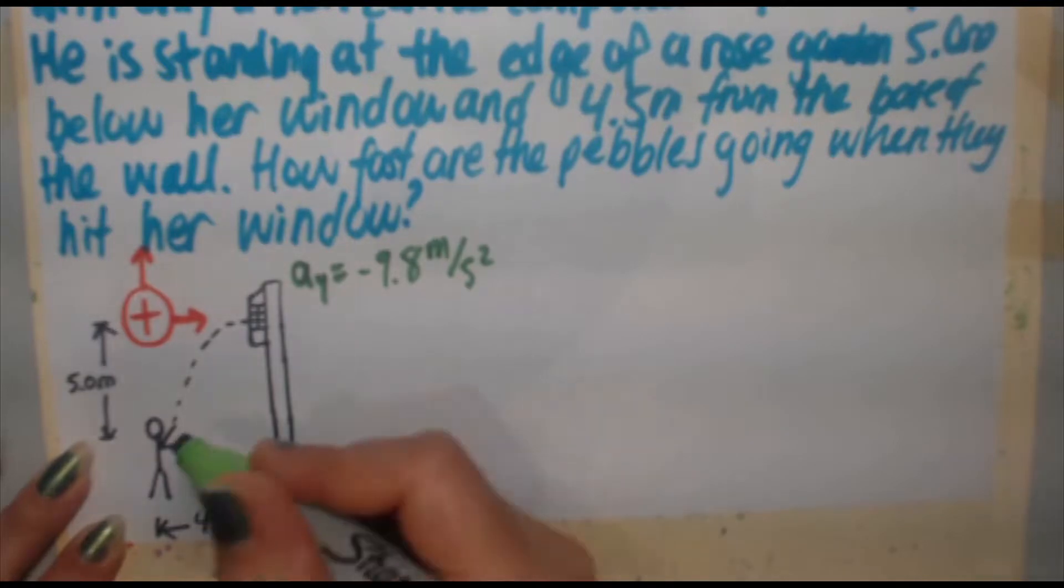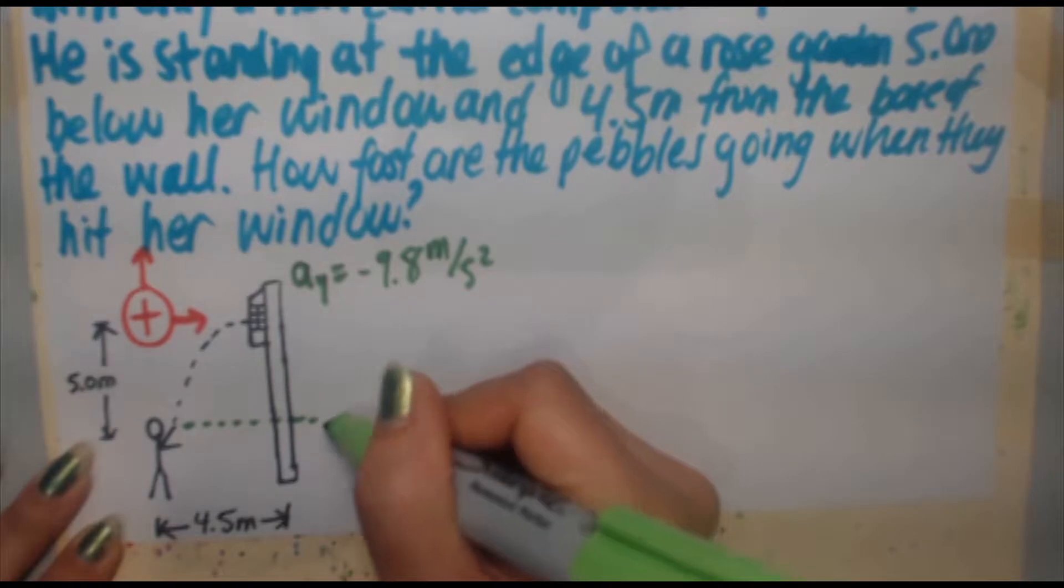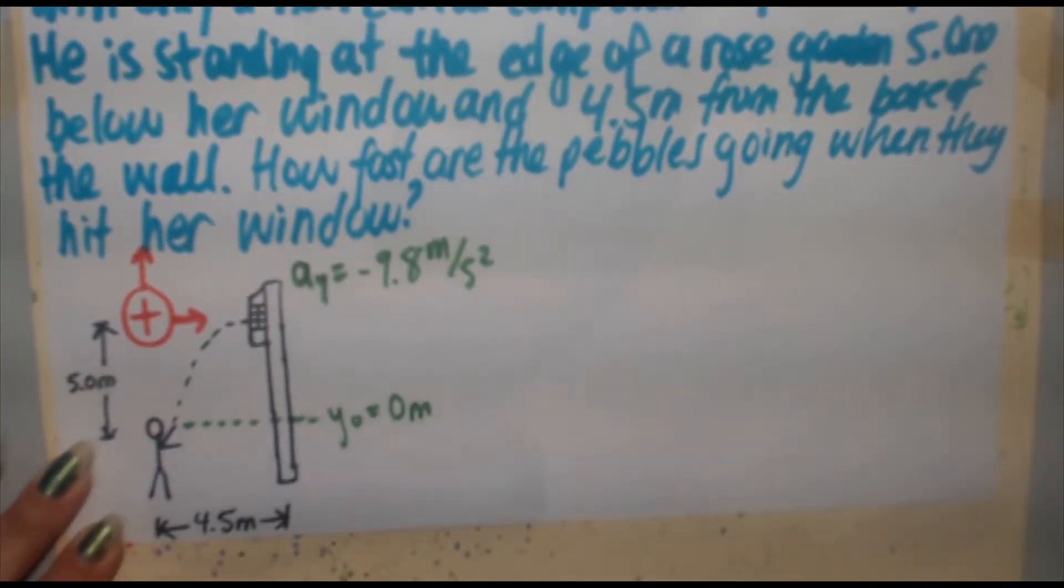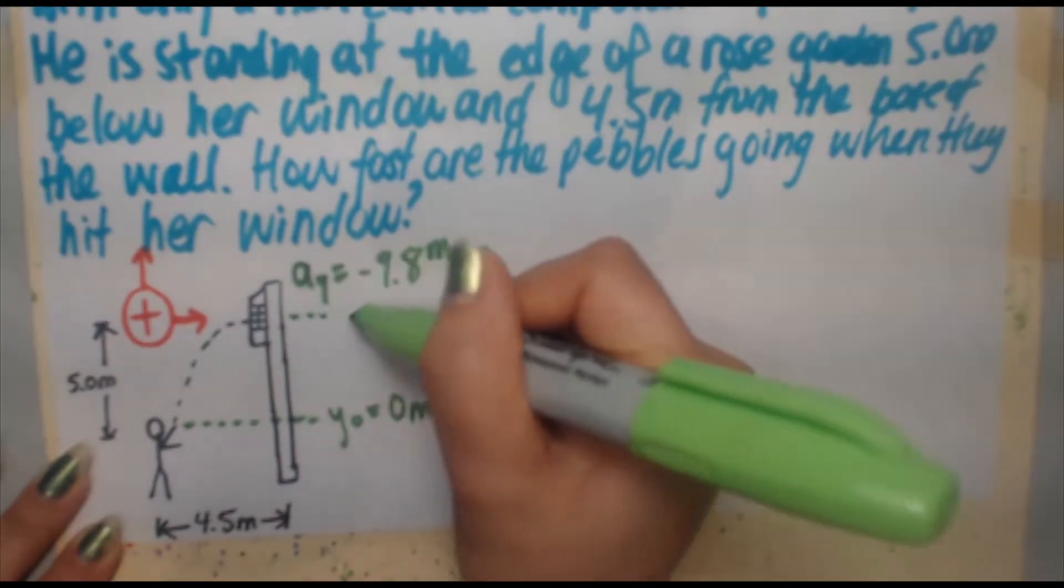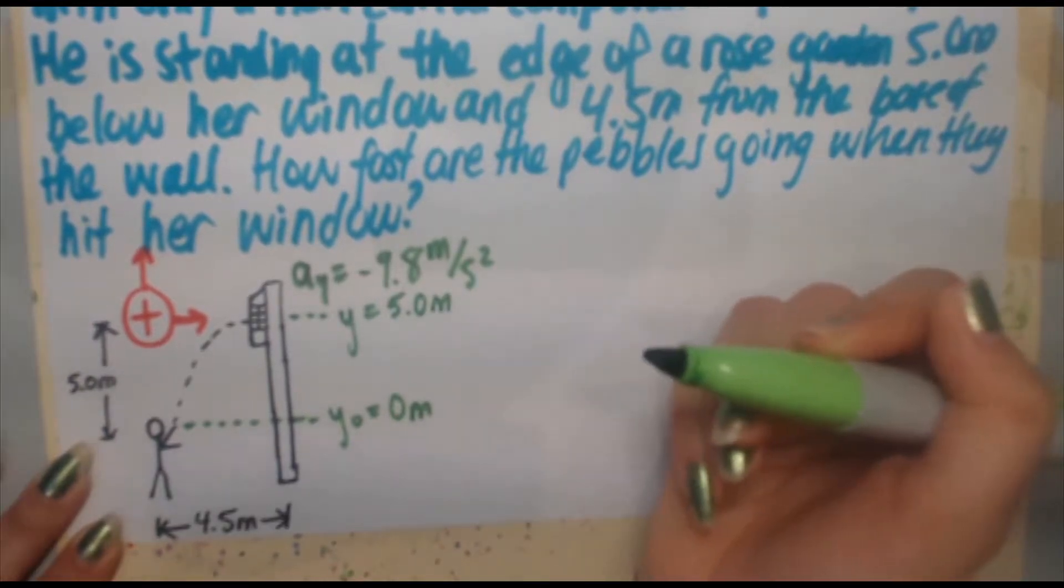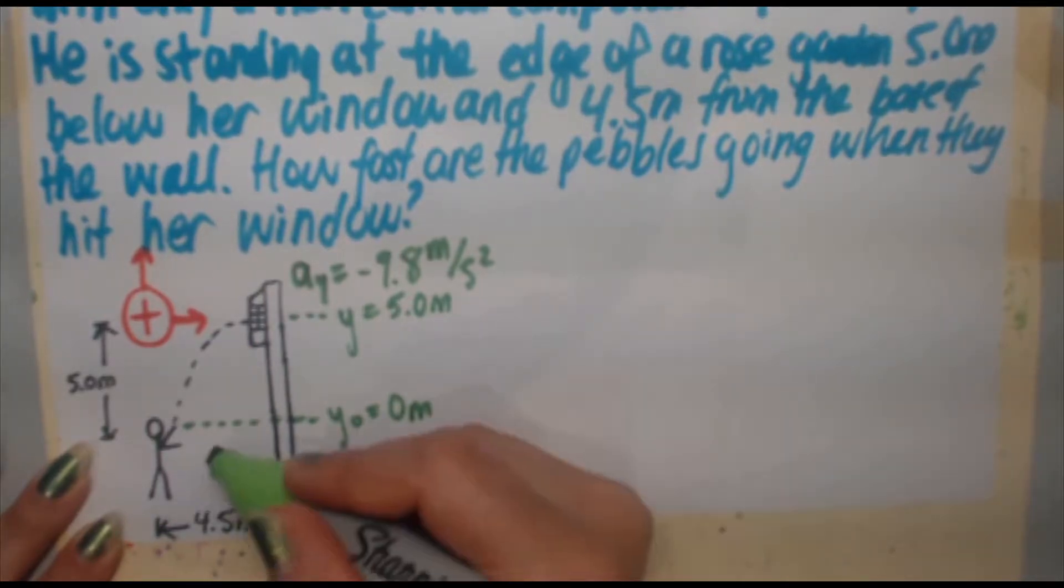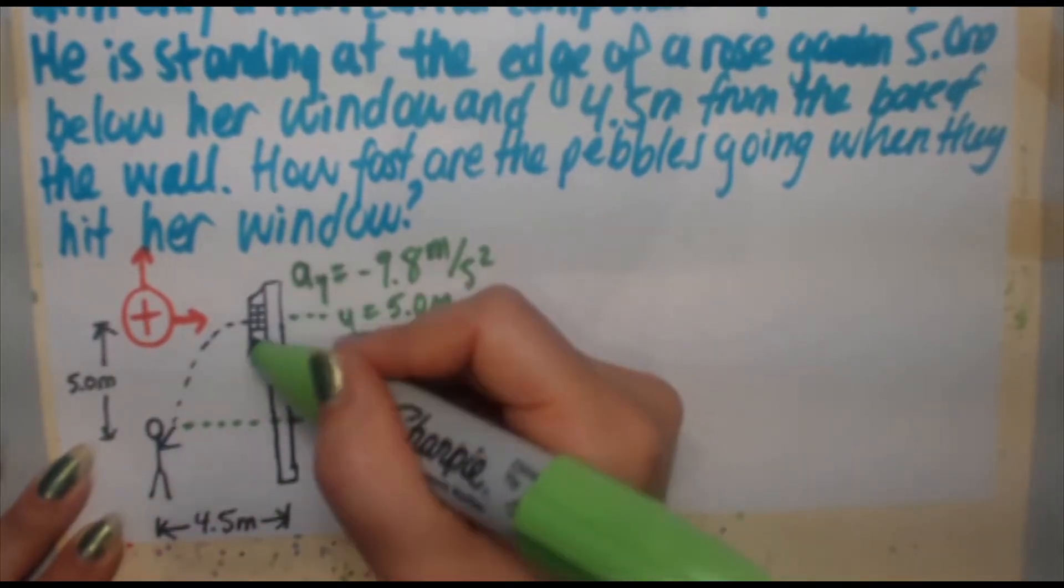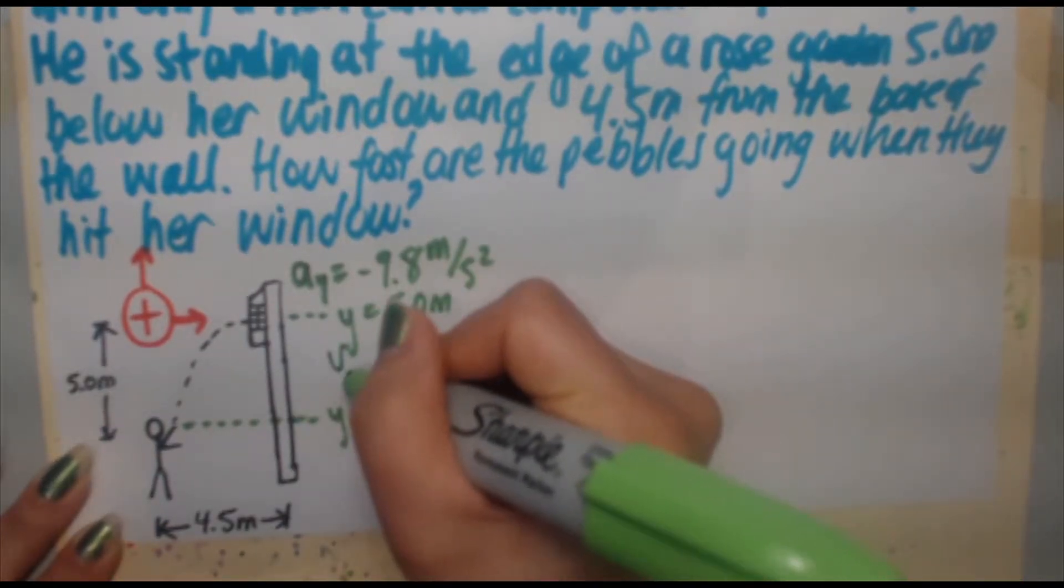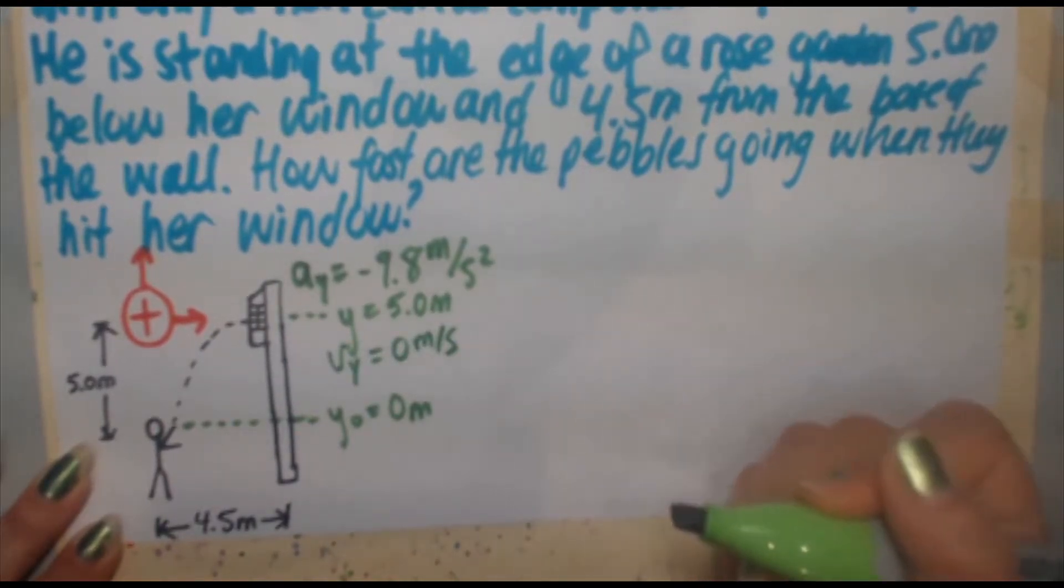Here where he lets go of the pebble, I'm going to let that be the initial y. I'm going to let that be y₀ equals 0 meters and it reaches a height up here, which is going to be your y final. So your y, which is equal to 5 meters. My initial y value, I don't know for the speed, but I do know that the final y speed is 0 because we only want the pebble to have a horizontal component of velocity. So vy is 0 meters per second.